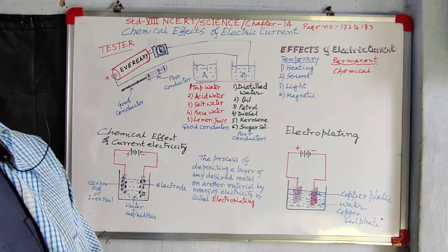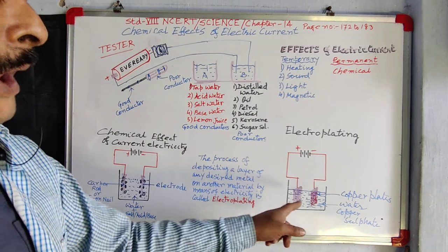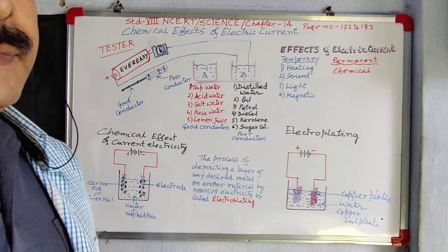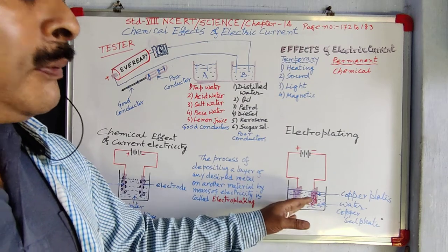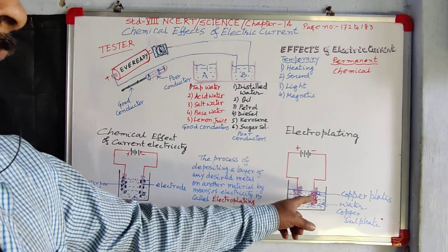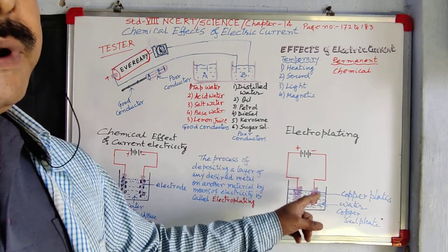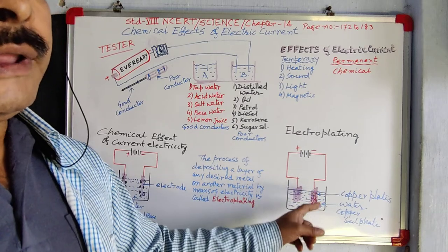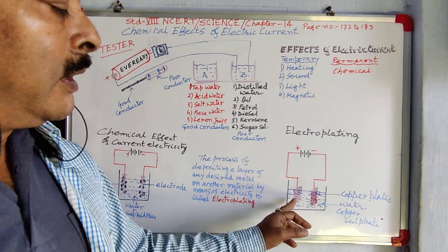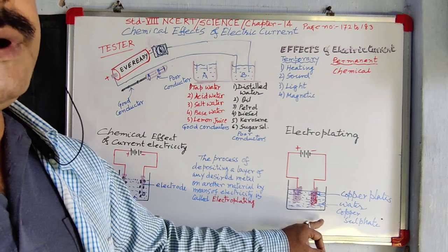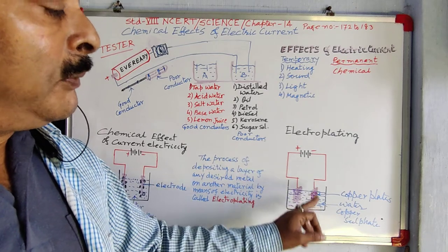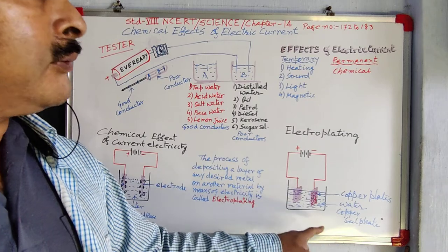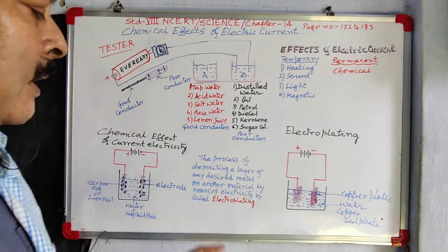And the negative end copper plate becomes thicker and thicker — it is gathering copper. So if we take, instead of a copper plate on the negative end, an iron nail or any other material, copper will still get deposited on it.